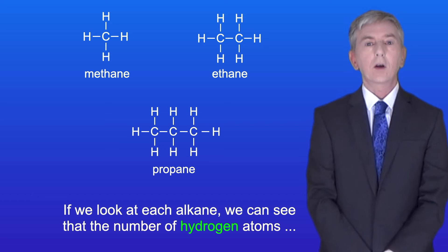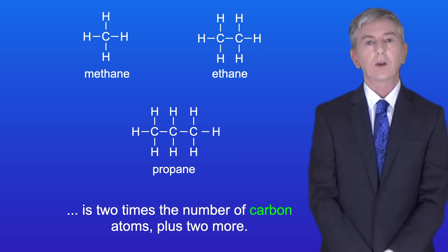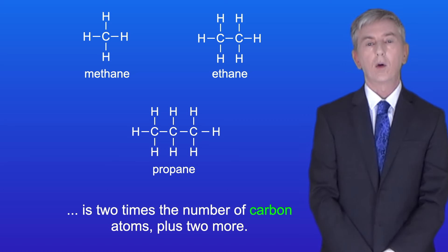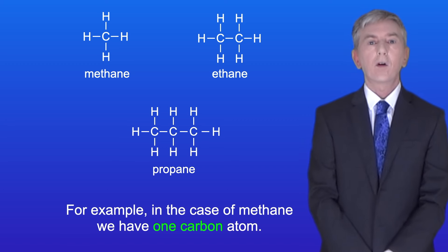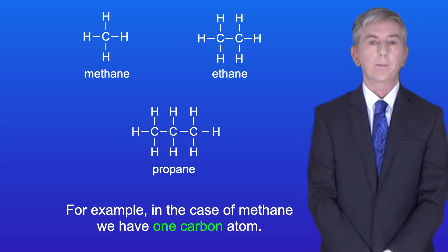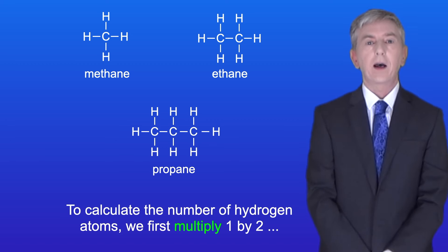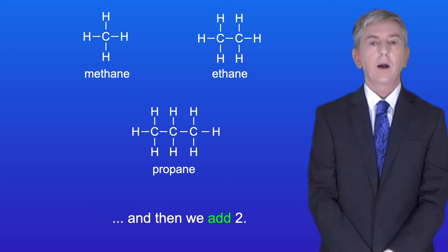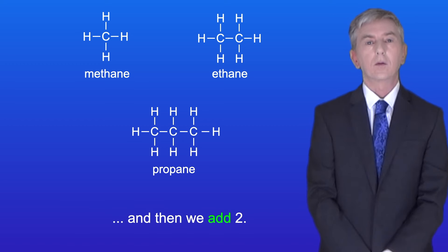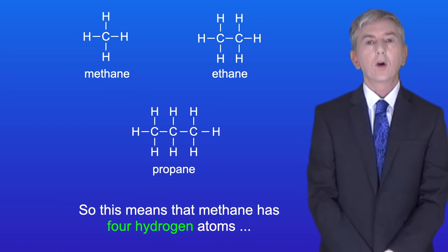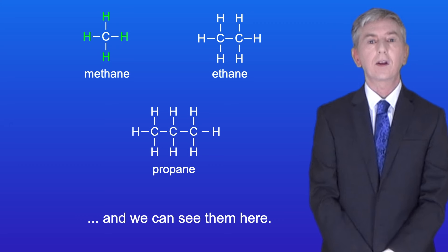Now if you look at each alkane we can see that the number of hydrogen atoms is two times the number of carbon atoms plus two more. For example in the case of methane we've got one carbon atom. To calculate the number of hydrogen atoms we first multiply one by two and then we add two. So this means that methane has four hydrogen atoms and we can see them here.